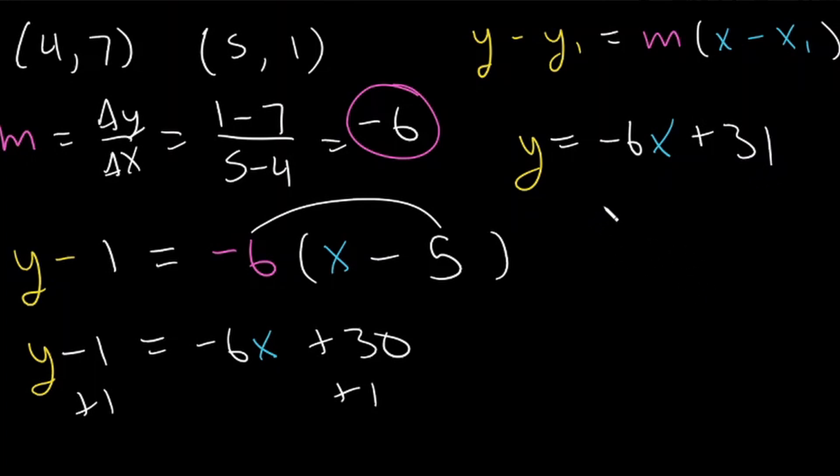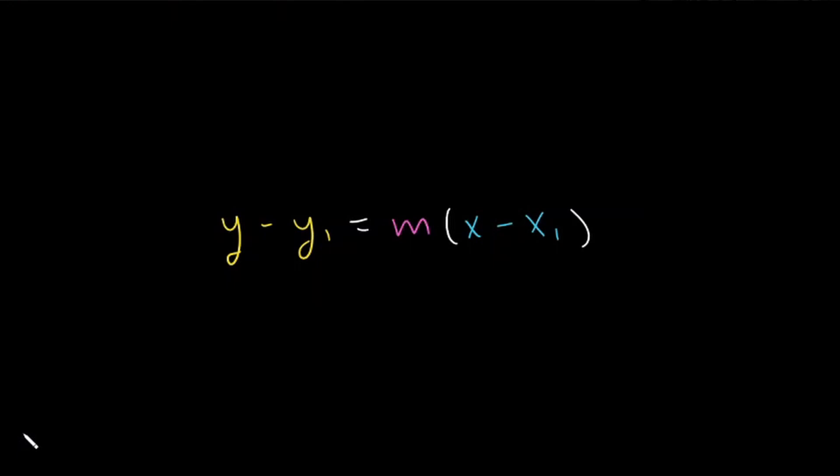Why don't we also put this in standard form, we can add 6x on both sides, and standard form will be 6x plus y is equal to 31. So now we have both forms of our linear equation just from two points. So now you know how to use the point-slope form of a linear equation.